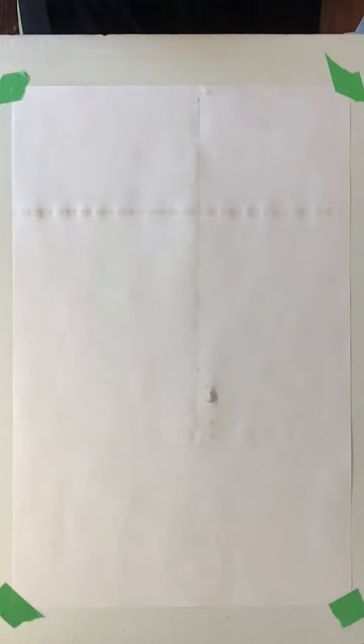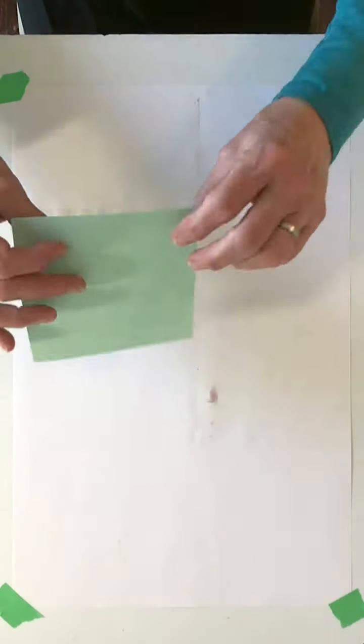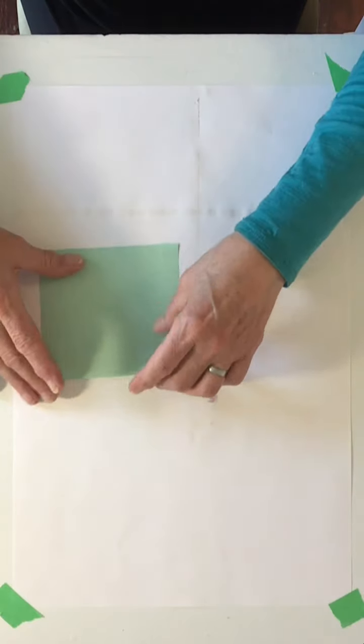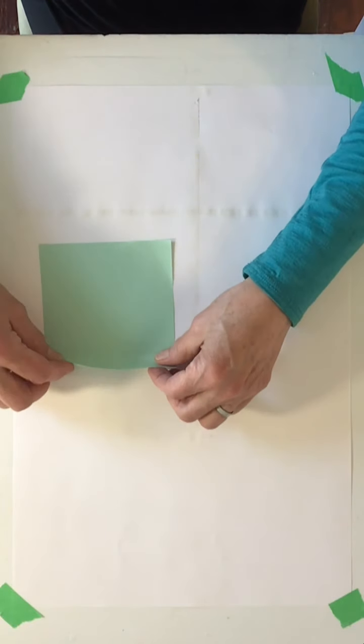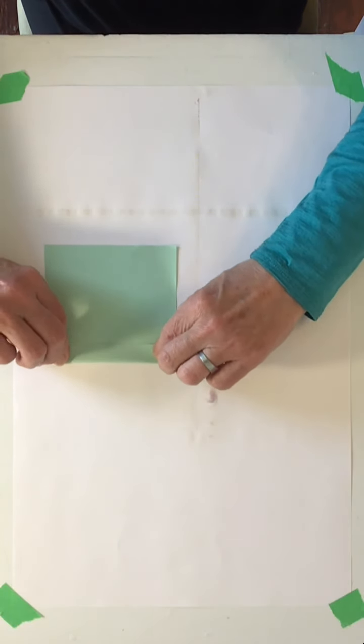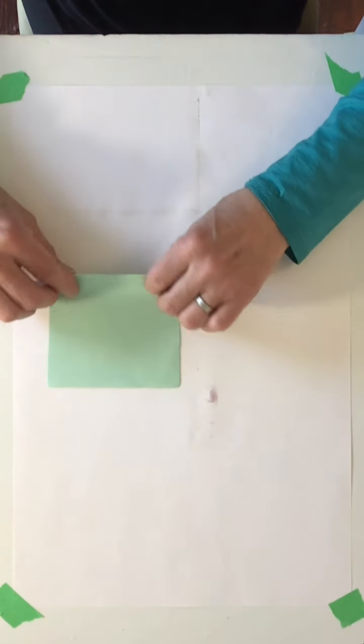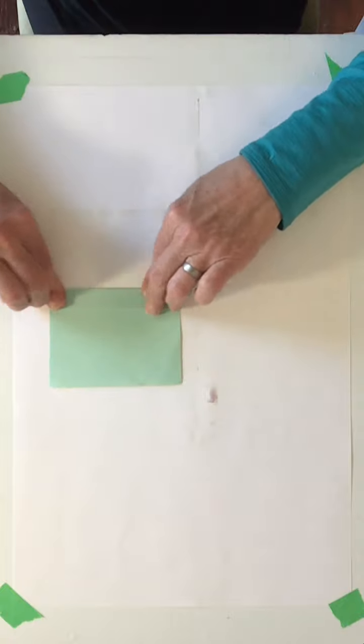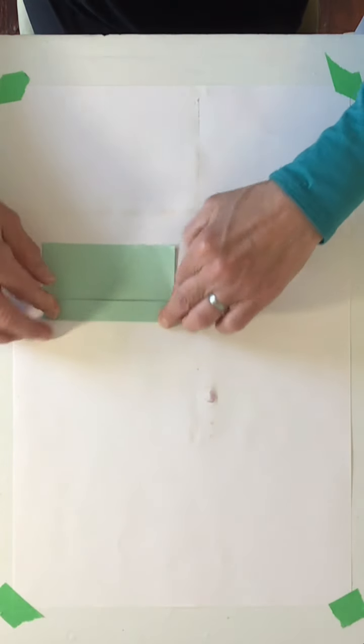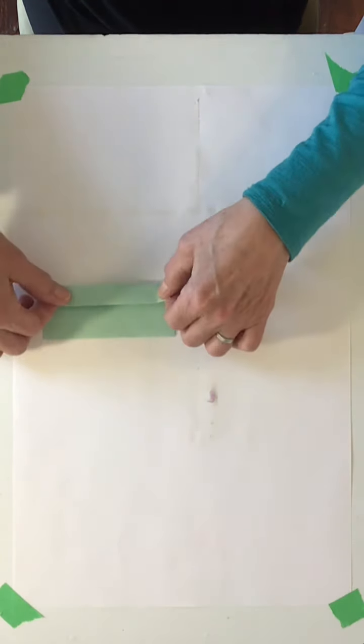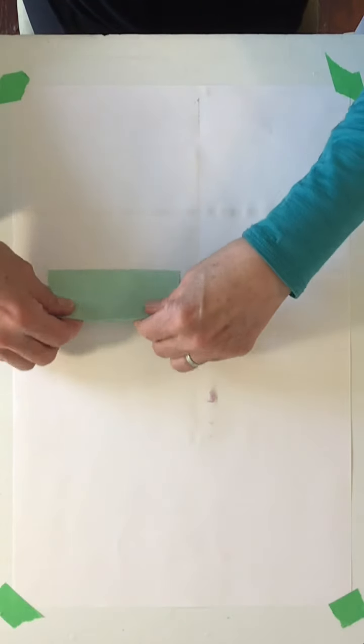Then we're ready to make our leaves. With the leaves what you want to do is fold your paper in an accordion five times. That's one, two, three, four, and five.